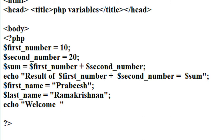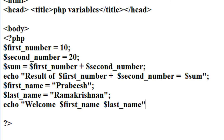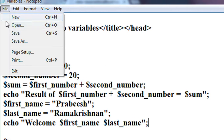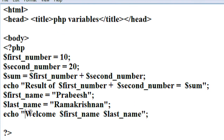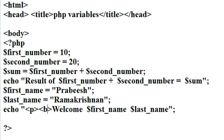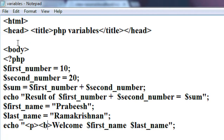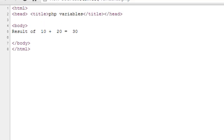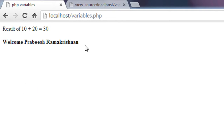I use echo to print: 'Welcome', followed by first_name, then a space, then last_name. I print it in a separate paragraph and make it bold. After saving and opening the browser, the output shows: 'Welcome Prabish Ramakrishnan'.